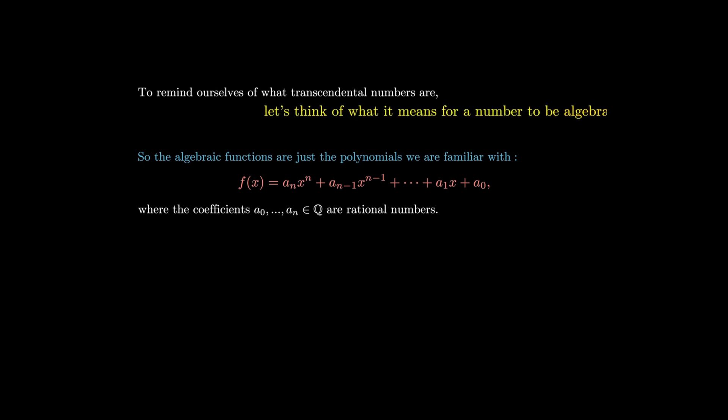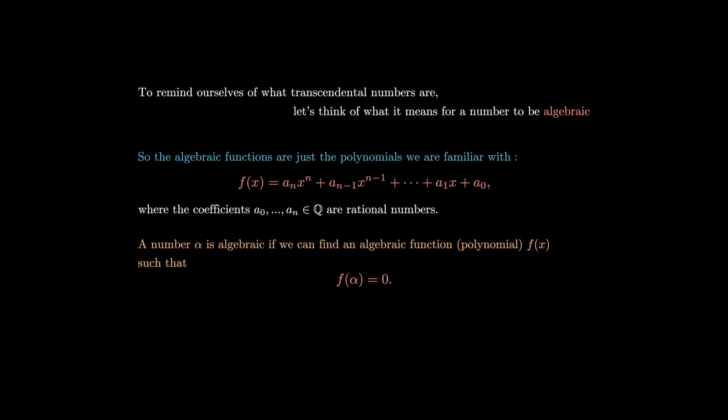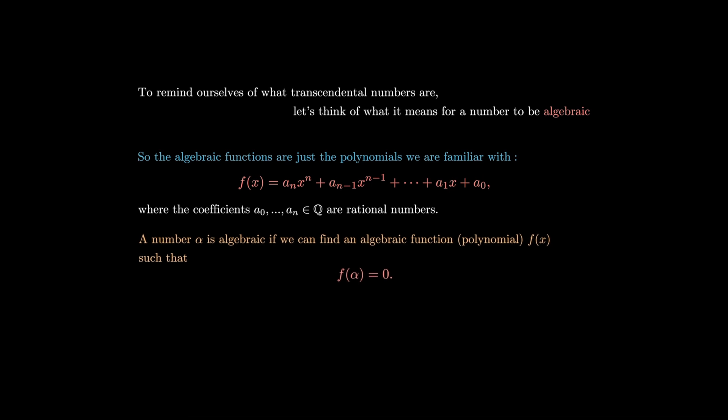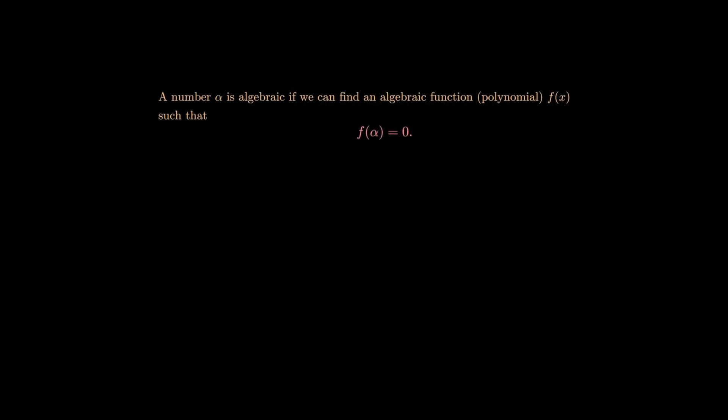So what do we mean when we say that a number is algebraic? A number is algebraic if we can find an algebraic function — in other words, a polynomial — such that when we insert that number into the polynomial, we get 0. In more formal language, a number is algebraic if it is given by the root of a polynomial with rational coefficients.